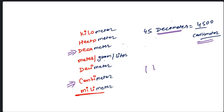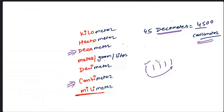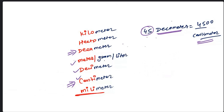Whenever you are counting the difference, one value you will leave. If you start counting from here, count 1, 2, 3, 4 — leave the last one. Or if you leave the first one, then count from there: 1, 2, 3, 4. You can't take all values; one must always be excluded. So from deca to centi, there are 3 zeros, and the answer is 45000. Understood?